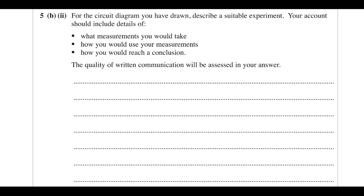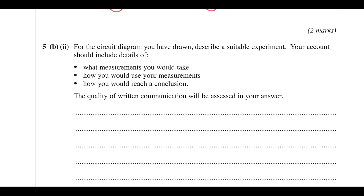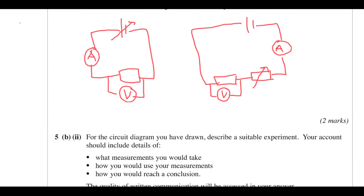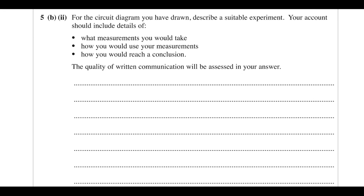For the circuit diagram drawn, describe a suitable experiment. First, set the power source to a certain value — say 5 volts — and measure the potential difference and the current.